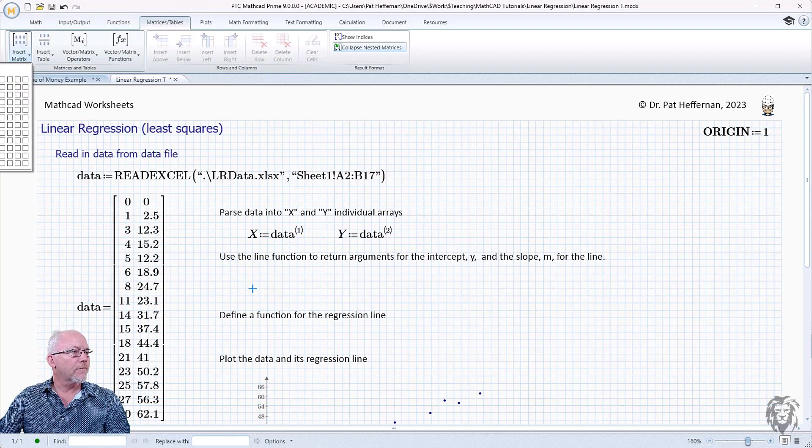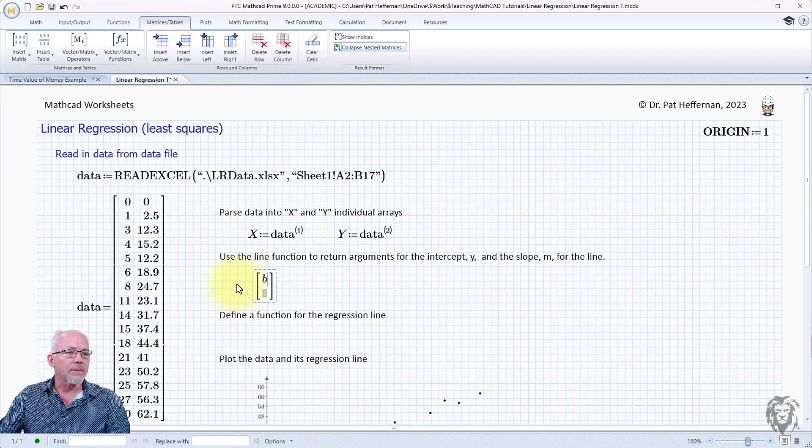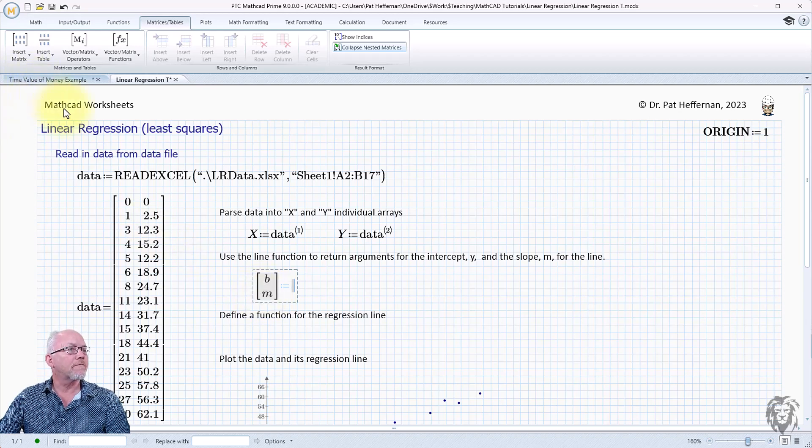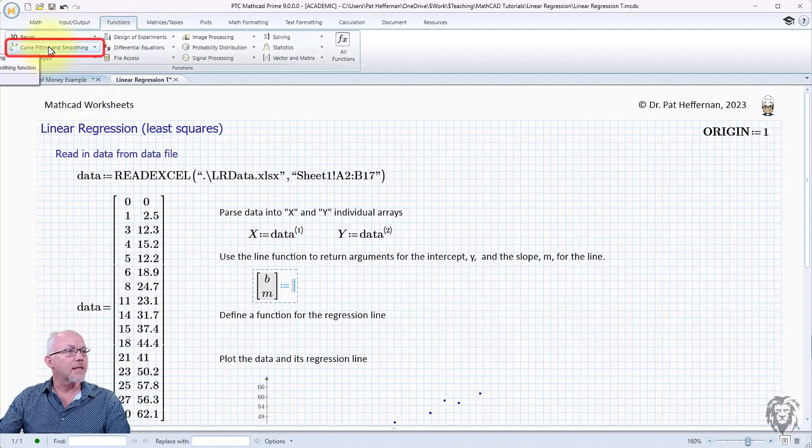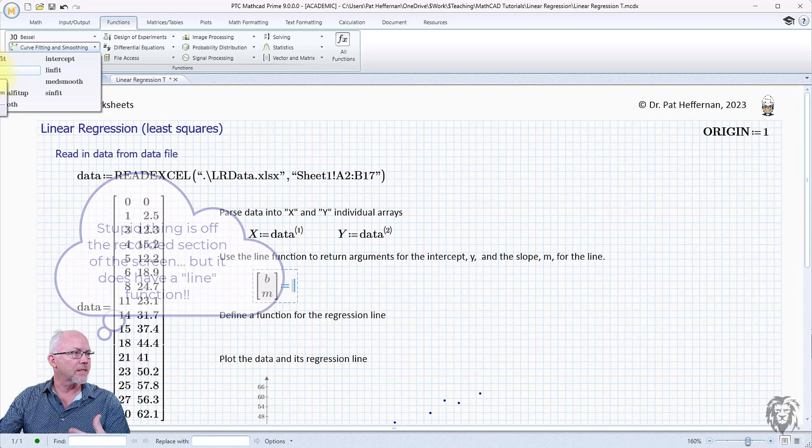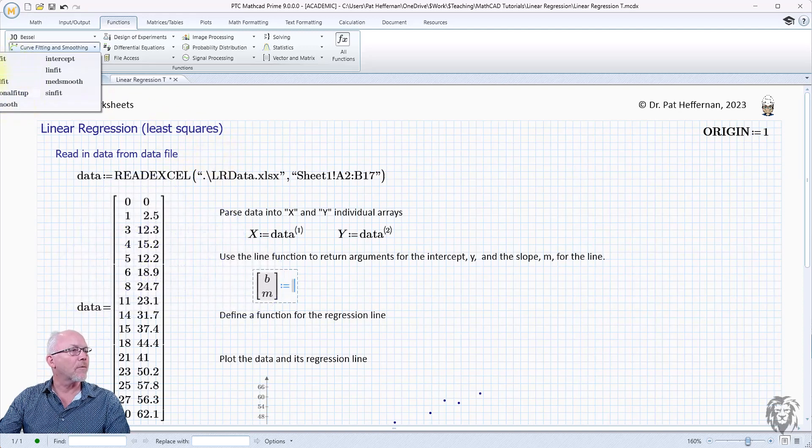What I'm going to do is set up my own array just for the two parameters, and so I want them assigned to b and m. Go outside, set that equal to, and we're going to use the line function. So where do you find it if you don't know it exists? Go up to functions, choose functions, and it's in the curve fitting and smoothing. If we go down here, we see line. Of course, you can hit F1, bring up the help. It gives you quick help here. I'll also show you the slope and the intercept up here—I'll show you those because they're associated with it.